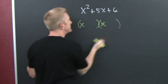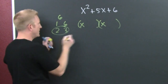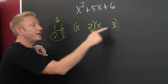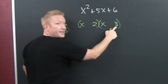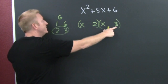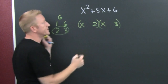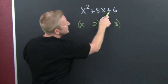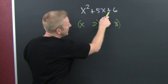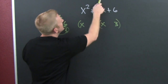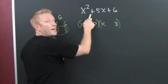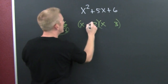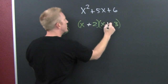X here, X there, 2 here, 3 there. I could have put the 3 there and the 2 here and that would have been fine. But now it's time to assign a sign. That sign says: same sign — they're both positive. Plus. Plus.